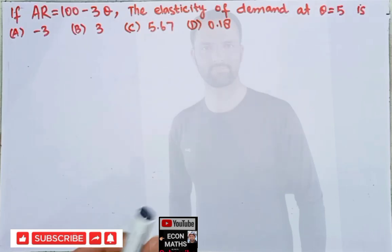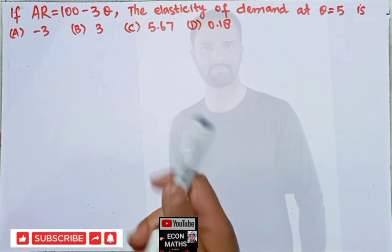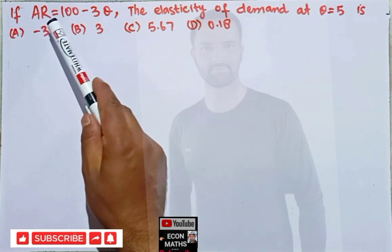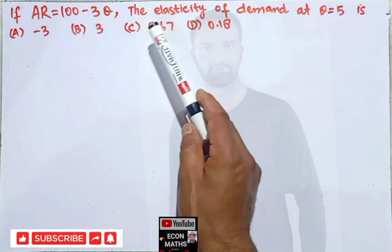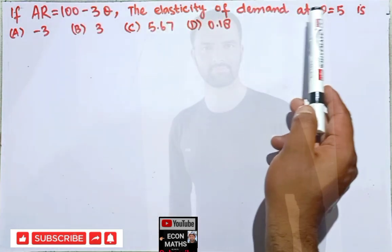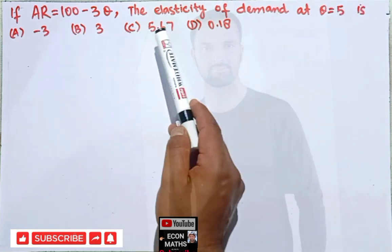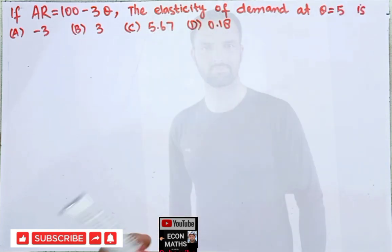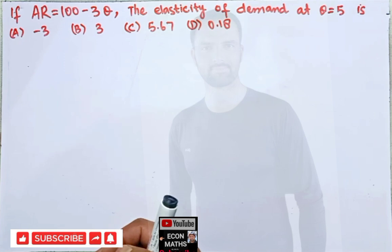In this video we will learn how to find the price elasticity of demand using two different methods. The question is: if average revenue is given as 100 minus 3Q, where Q is the quantity, the elasticity of demand at Q equals 5 is — the options are minus 3, 3, 5.67, and 0.18. We will use two different methods to find the price elasticity of demand.